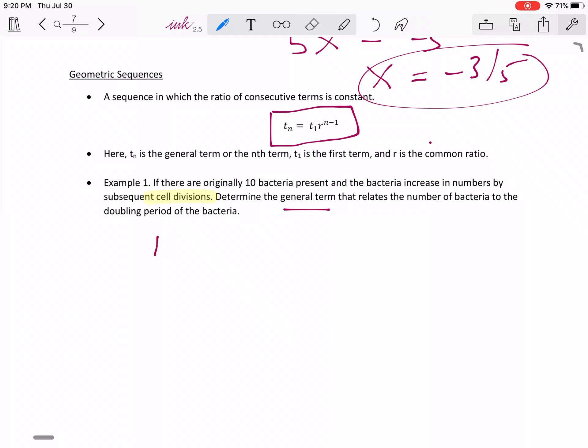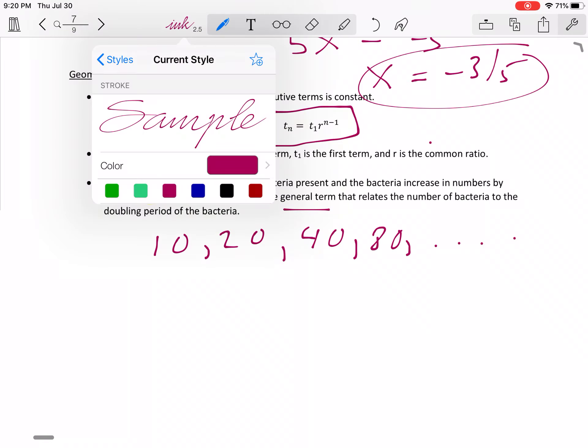Right, so if we start with 10, then we would get to 20, 40, 80, and so on. So that's your geometric sequence. Notice how each one is off by a factor of two.